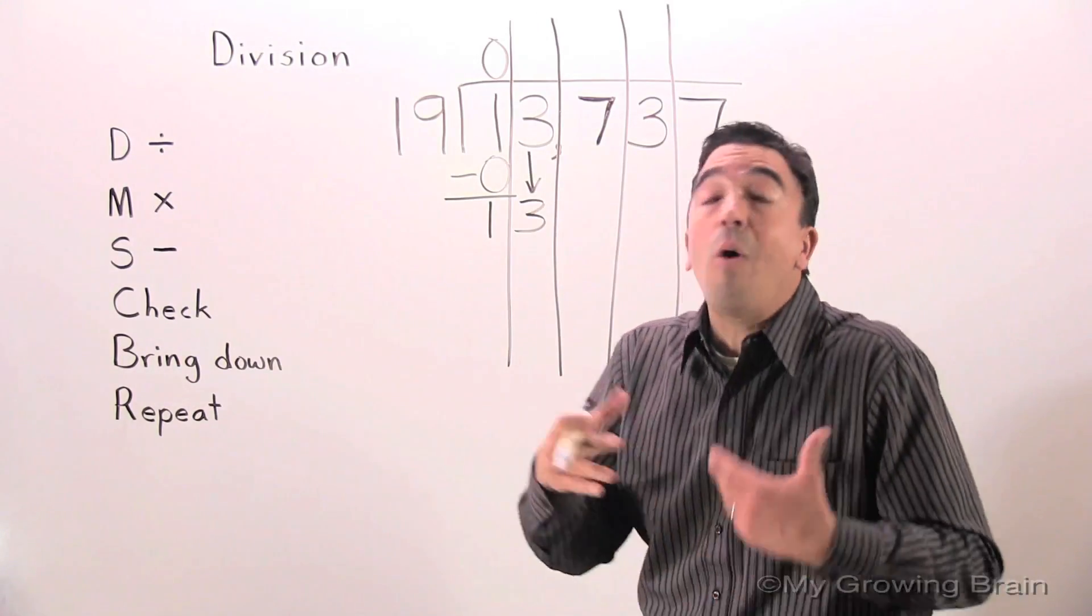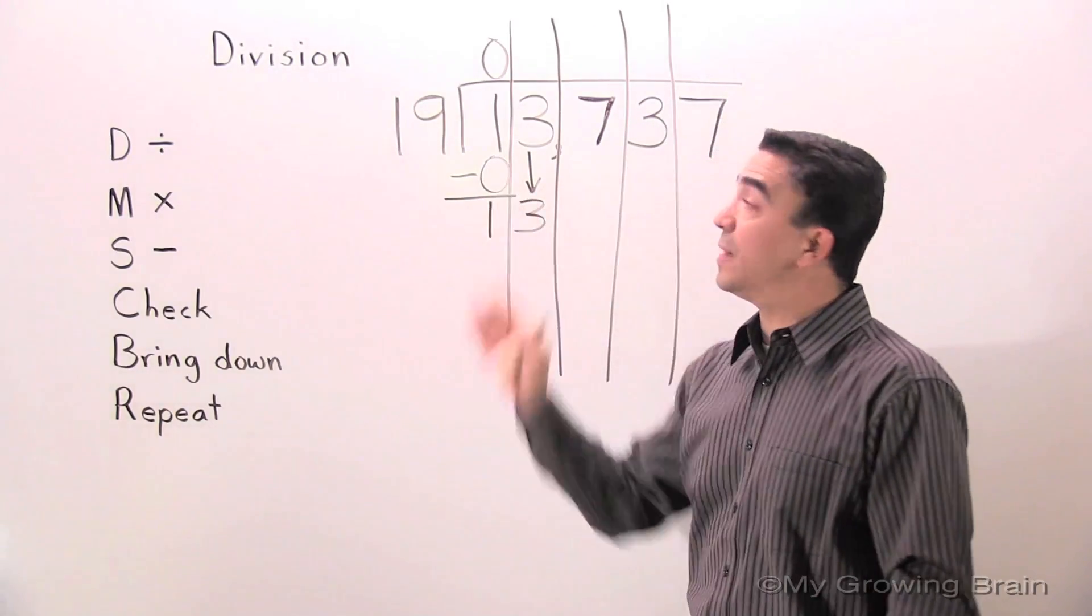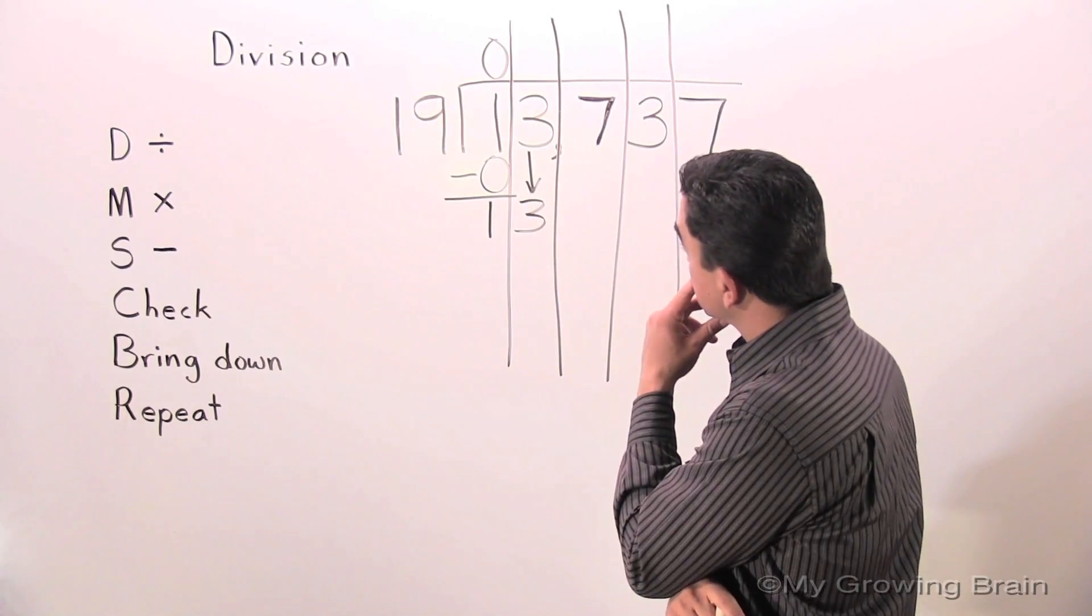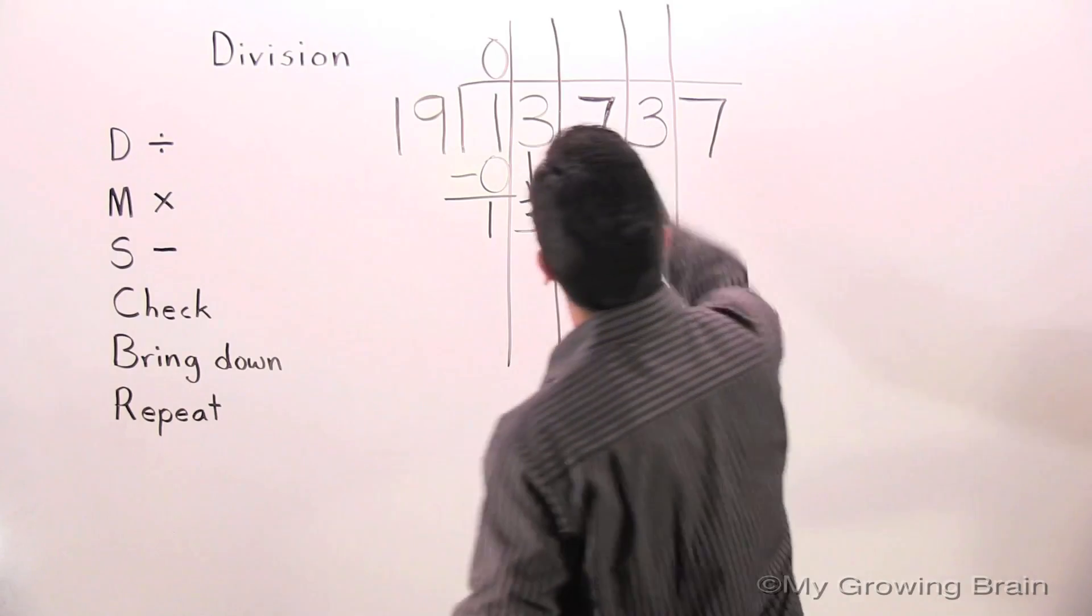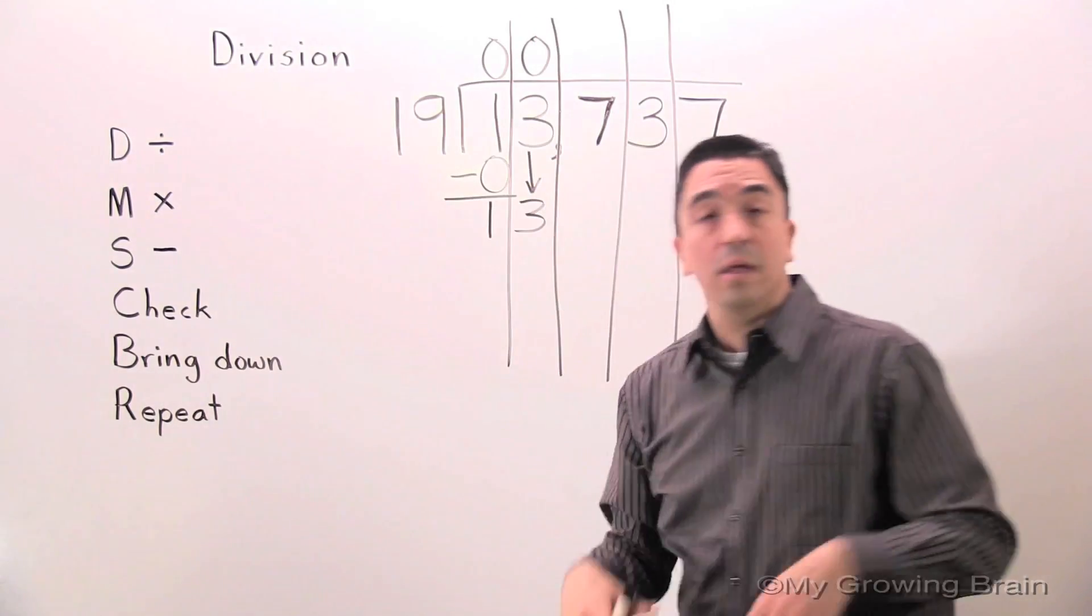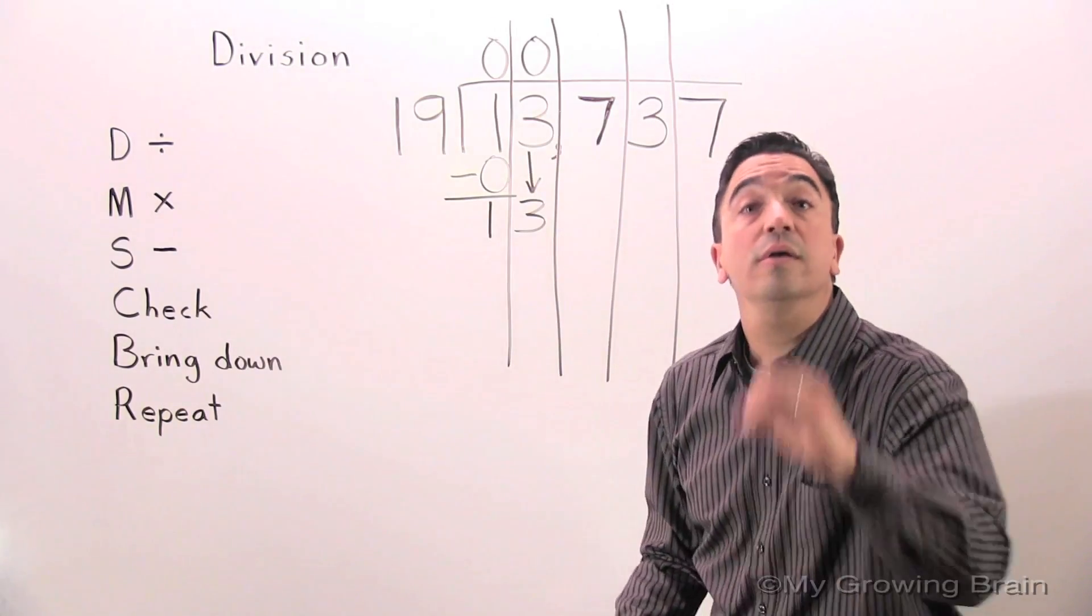Repeat the whole process. Go back to the top. Divide. 13 divided by 19 or 19 into 13. Can't do it. Use a zero. Next step. Multiply. 19 times zero, zero.